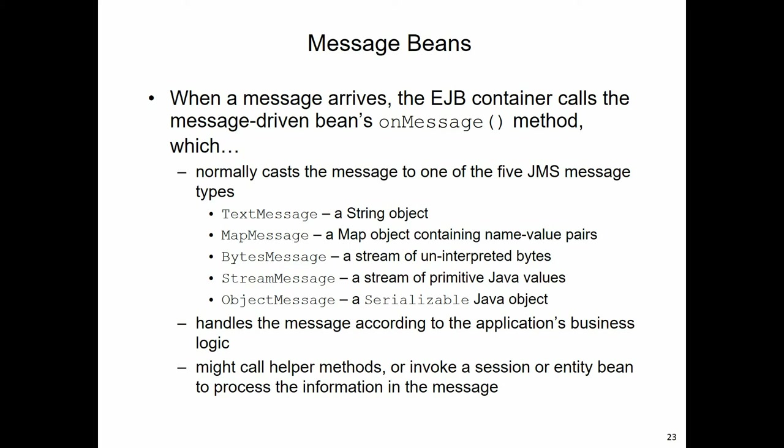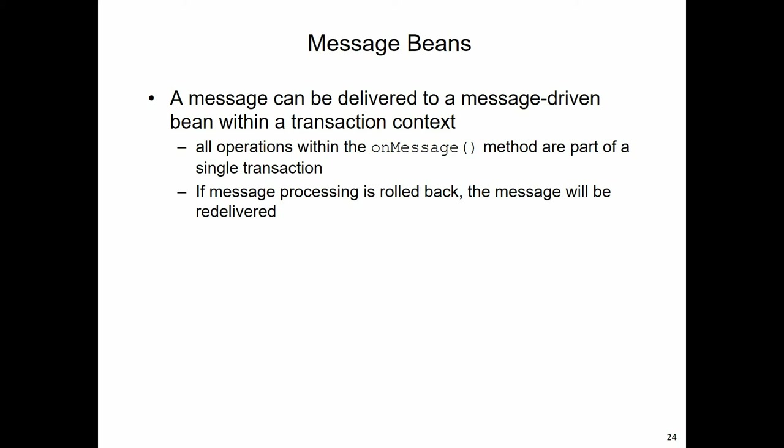What happens next will depend entirely upon the application's business rules - how we process that message depends on what the requirements of the business are. It might cause some update in the database, and this is where transactions are useful. If we deliver a message to a bean within a transaction context, and that transaction fails for whatever reason, all operations within that onMessage method will be undone when we roll back the transaction. The message processing will also be rolled back - the JMS provider will consider the message was never sent and will attempt delivery again, continuing until the consumer finally consumes it successfully without the transaction rolling back.